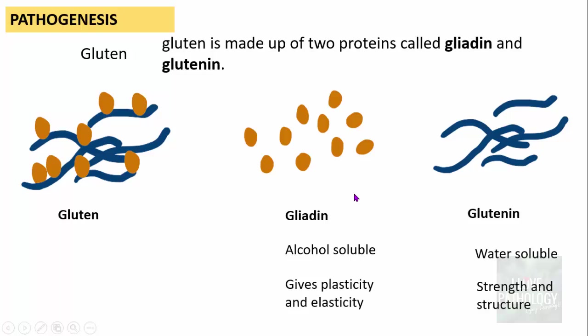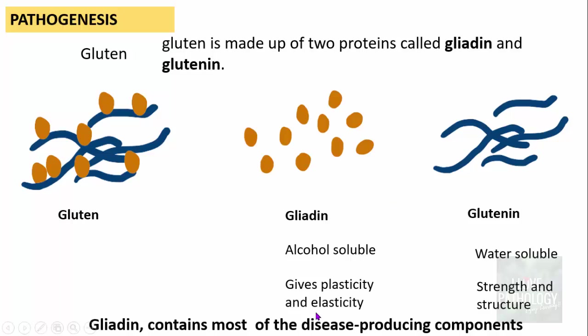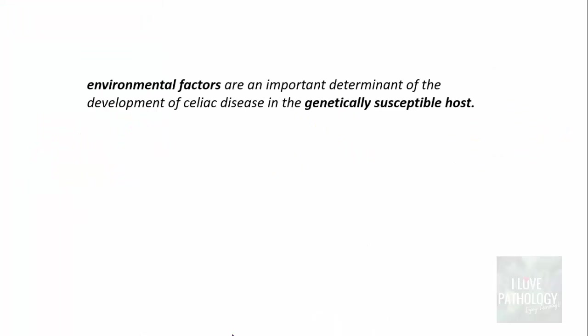To understand celiac disease, we need to remember that gliadin contains most of the disease-producing components. It is the gliadin component of gluten which is the culprit in celiac disease pathogenesis.